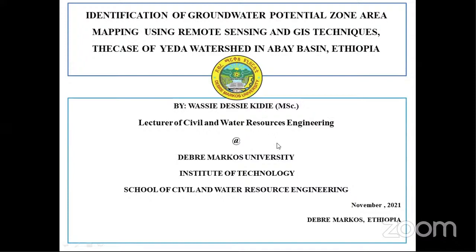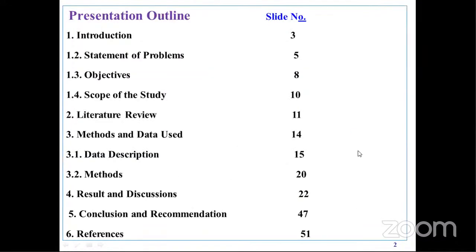When it comes to the presentation, there is a presentation outline. There is an introduction part, assessment of the problem, objective and scope of the study, literature review, methods and data used, data discrimination methods, results and discussion, conclusion and recommendation, and finally a reference part.